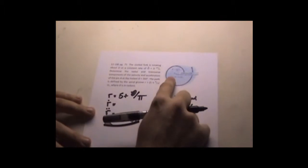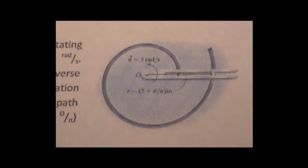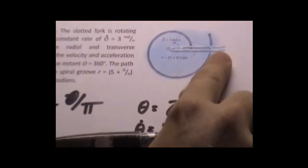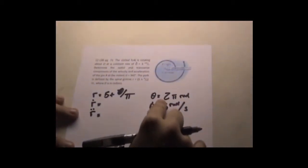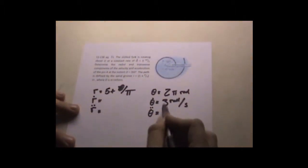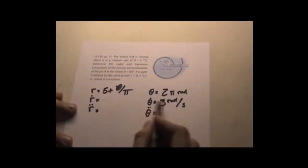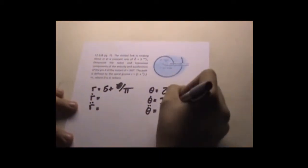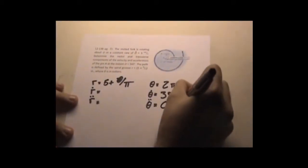θ̇ we get 3 radians. R is 5 plus θ over π. And we see as it goes around the spiral that it's going to end up being 2π radians which is a whole 360 degrees. You take the derivative of this with respect to time of the θ̇ and you get zero. That means there's no acceleration in here at all in the θ direction.